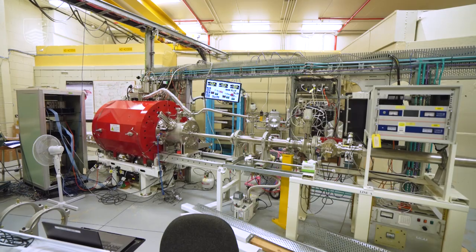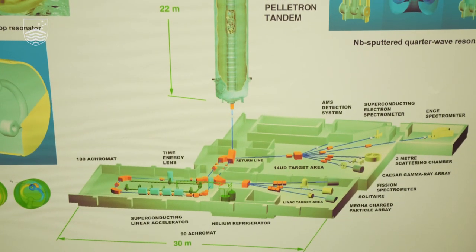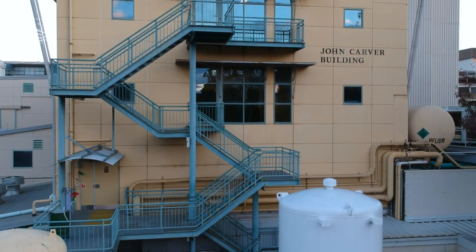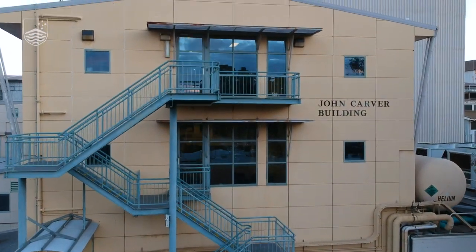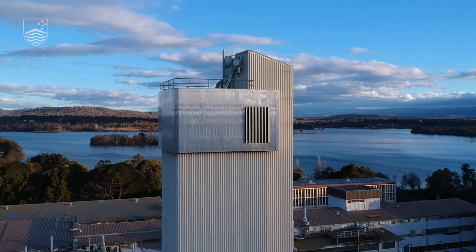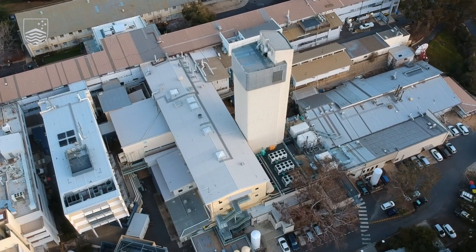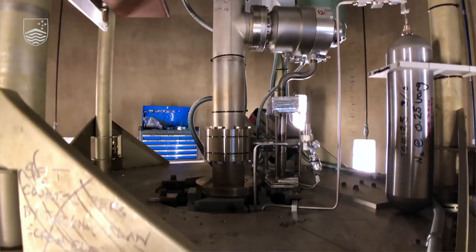The Heavy Ion Accelerator Facility is coming up to be 50 years old. It is one of three highest energy ion accelerators of this type in the world. It accelerates particles to very high velocities. So it can go up to, for example, protons up to 30,000 kilometers per second.